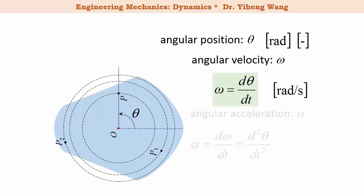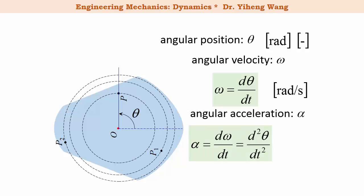Angular acceleration, alpha, is defined as the time derivative of angular velocity, d omega over dt, or the second time derivative of angular position theta. It has a unit of radian per second squared. If we cancel out dt from these two equations, we get the third kinematic equation: alpha d theta equals omega d omega.